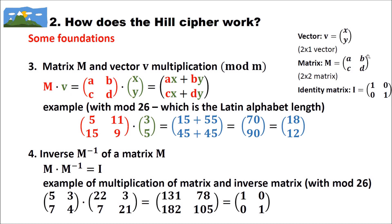We can also have bigger matrices — 2x3, 3x3, and so on. We also need to know what an identity matrix is. The identity matrix consists only of ones and zeros, with a diagonal of ones from the upper-left to the lower-right corner. A 2x2 identity matrix is: 1, 0, 0, 1. A 3x3 identity matrix is: 1, 0, 0, 0, 1, 0, 0, 0, 1.